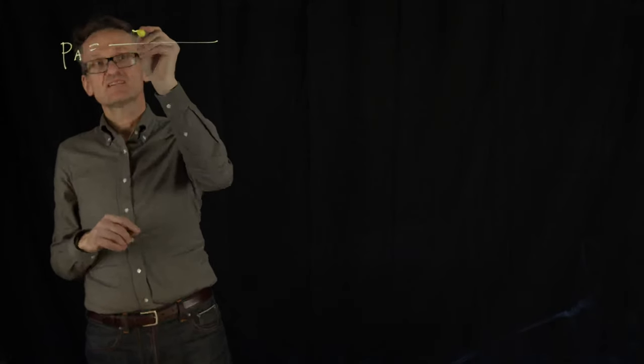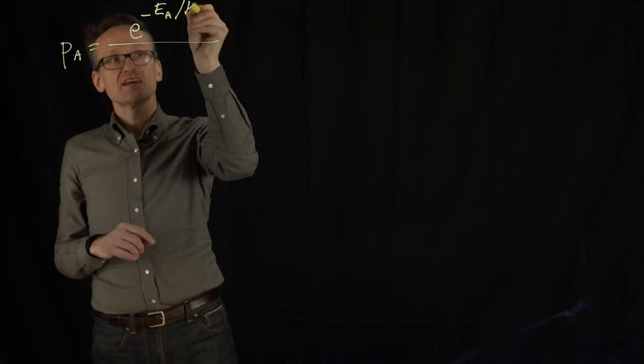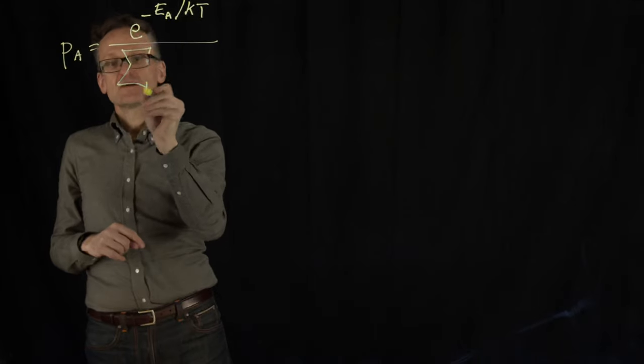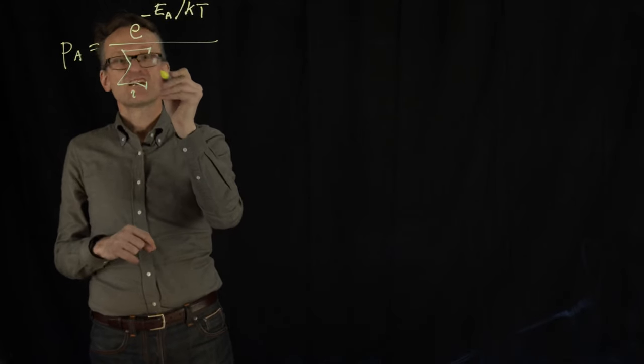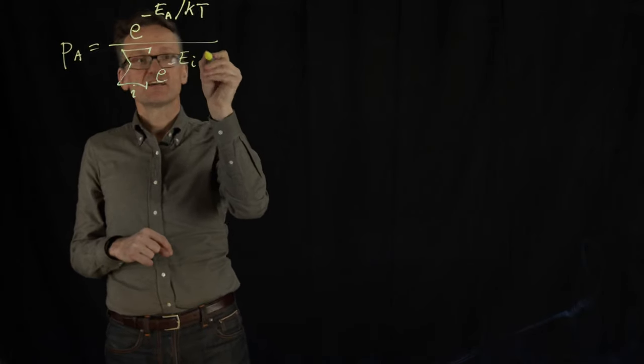Let's say that is e raised to minus E_A divided by kT. Couldn't I just normalize this by summing over all states: e raised to minus E_i divided by kT?